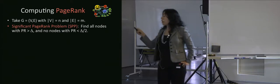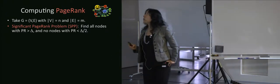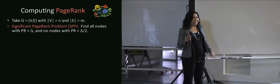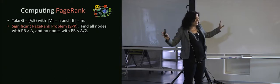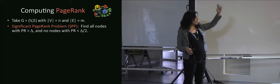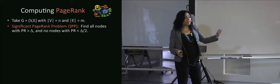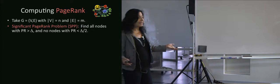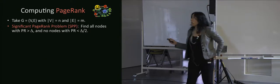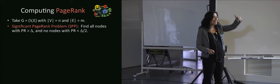The significant PageRank problem: I have a graph with N vertices and M edges. The goal is to find all pages with PageRank greater than some threshold δ, and don't return anything with PageRank less than δ/2. Previous results: the power iteration method ran in order of the number of edges; a linear algebra improvement brought it down to the number of nodes. There's a lower bound on the running time from the existence of n/δ sites each with PageRank roughly δ — you can't do better than n/δ.